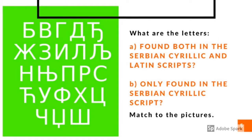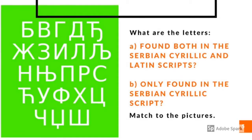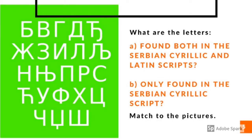Our second exercise: What are the letters? A — found both in the Serbian Cyrillic and Latin scripts; that's the first yellow box. B — only found in the Serbian Cyrillic script; that's the second green box.